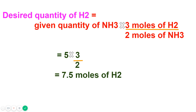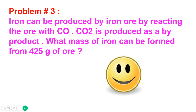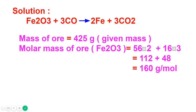Problem number three: iron can be produced from iron ore by reacting the ore with carbon monoxide; carbon dioxide is produced as a byproduct. What mass of iron can be formed from 425 grams of ore? The mass is given in grams, so first convert to moles. The balanced chemical equation is Fe₂O₃ + 3CO → 2Fe + 3CO₂.